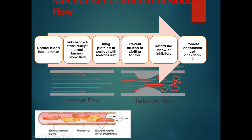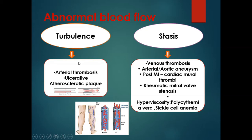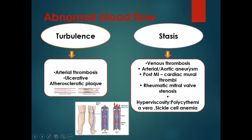Abnormal blood flow — turbulence — can cause arterial thrombosis, such as over ulcerative atherosclerotic plaques, while stasis basically causes venous thrombosis. Arterial aortic aneurysm and post-myocardial infarction cause cardiac mural thrombi. Rheumatic mitral valve stenosis and hyperviscosity states such as polycythemia vera and sickle cell anemia can cause stasis of blood, leading to thrombus formation. So stasis-associated thrombi form in veins, while turbulence-associated thrombi form in arteries. Causes of thrombi in arteries and heart walls are turbulent blood flow or endothelial injury such as ulcerative atherosclerotic plaque.